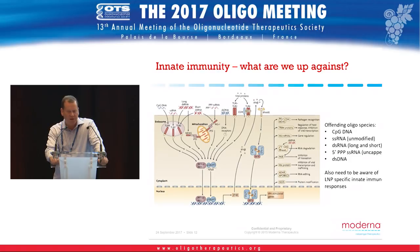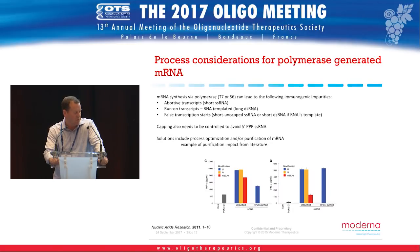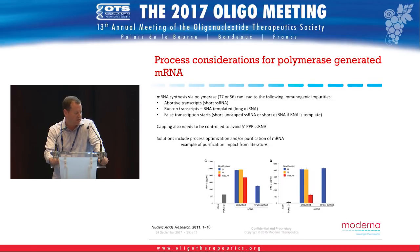Published work from the University of Pennsylvania in 2011 highlights the need for purity of your RNA to minimize innate immune responses. When you make mRNA via T7 or S6 polymerase, you can have abortive transcripts, run-on transcripts, and false transcription starts — leading to both single and duplex RNA impurities. For both TNF-alpha and interferon-alpha stimulation, unpurified material is much more immunogenic, whereas HPLC-purified messenger RNA significantly diminishes that activation.